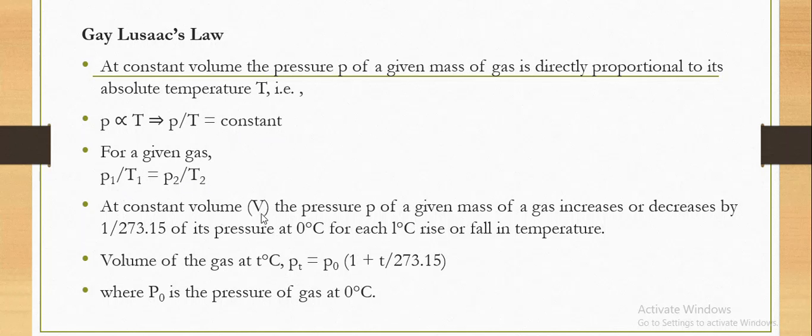At constant volume, the pressure P of a given mass of a gas increases or decreases by 1/273.15 of its pressure at 0°C for each 1°C rise or fall in temperature. The pressure of the gas at t°C is Pₜ = P₀(1 + t/273.15), where P₀ is the pressure of gas at 0°C.